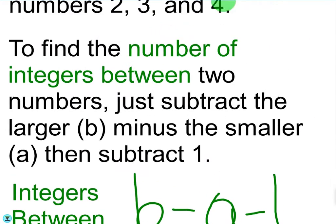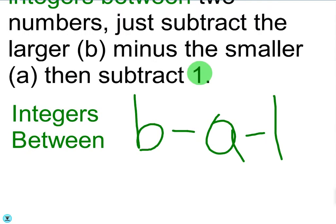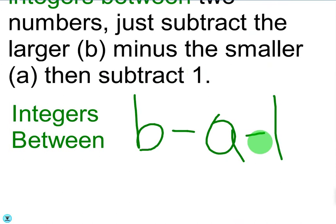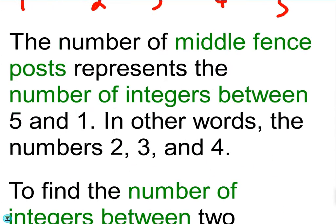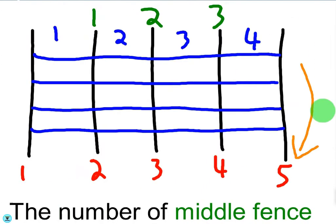So to find the number of integers between two numbers, just subtract the larger number — call it b — minus the smaller number a, then subtract one from that. The formula for that would be b minus a minus one. So b minus a gives you the difference between the integers. Once you find that, which is the number of fence sections, you then need to subtract one from that to figure out how many integers are between those two integers. This illustration is a great way to remember the rule.